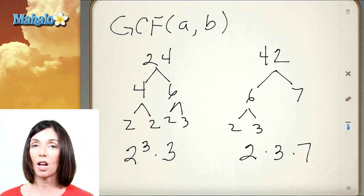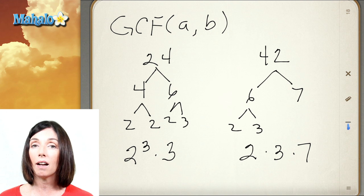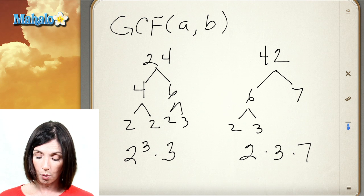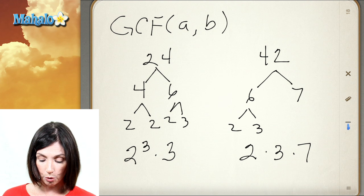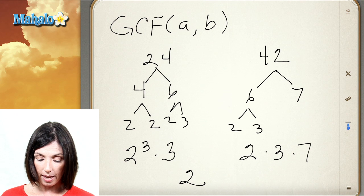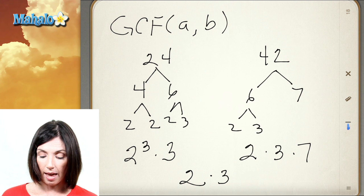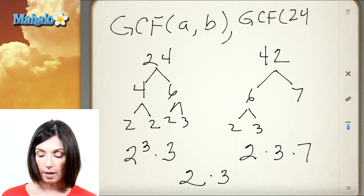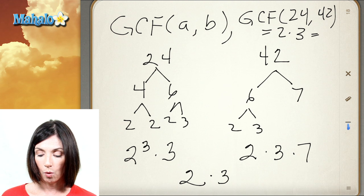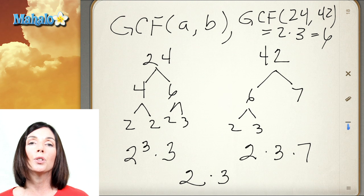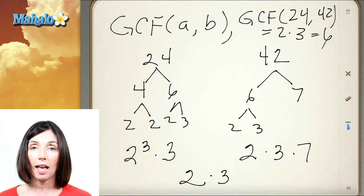Now to find the greatest common factor of these two numbers, I just take whatever they have in common in their prime factorizations. They each have a 2 in common and they have a 3 in common, and that's it. That means the greatest common factor of 24 and 42 is equal to 2 times 3, or 6. So you can use the prime factorizations and then just take whatever they have in common — that'll be their greatest common factor.